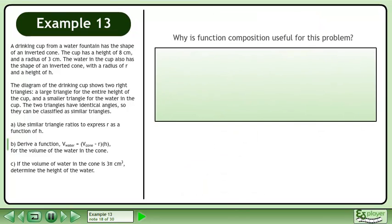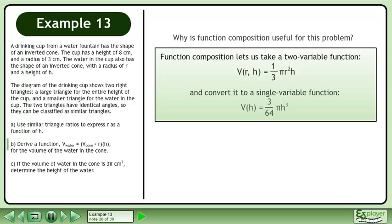Why is function composition useful for this problem? Function composition lets us take a two-variable function, v of r and h equals 1 over 3 pi r squared h, and convert it to a single variable function, v of h equals 3 over 64 pi h cubed.